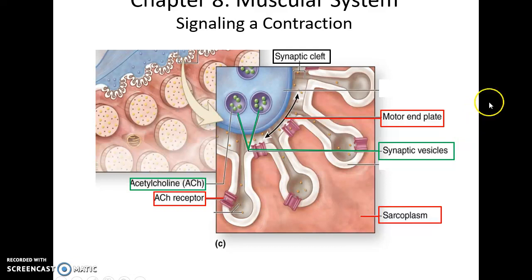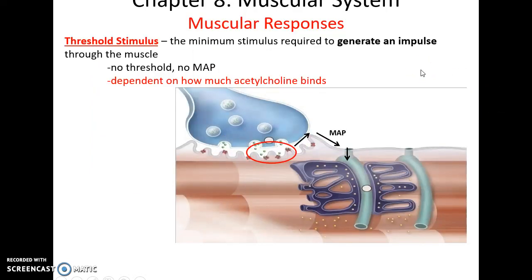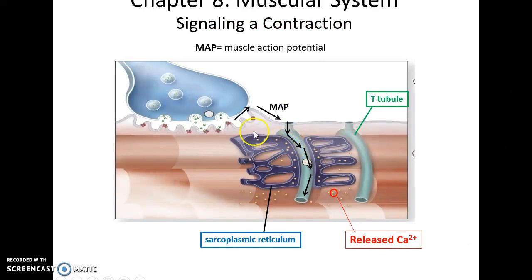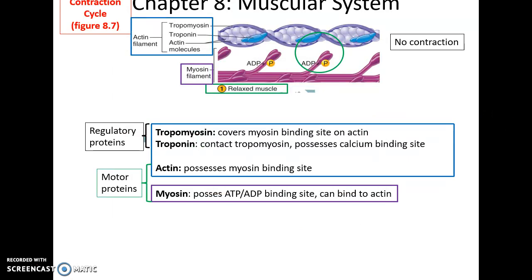The acetylcholine diffuses across the synaptic cleft and binds to acetylcholine receptors on the motor end plate. When that happens, those receptors open channels, changing the charge at the motor end plate. If enough channels open and enough acetylcholine binds, this reaches the threshold stimulus — the minimum needed to generate an impulse along the skeletal muscle cell membrane, also known as a muscle action potential. This charge moves along the sarcolemma and then down into the transverse tubules, triggering the sarcoplasmic reticulum to release its calcium ions into the sarcoplasm.